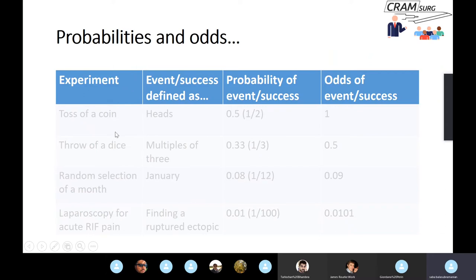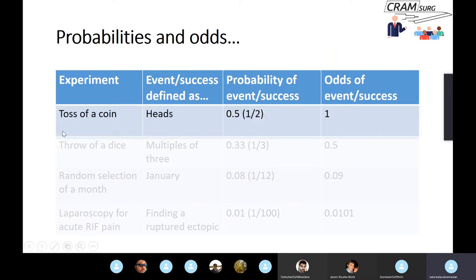Here is a table going through several experiments with events or successes, showing the probability and odds for each. For a coin toss where the event is getting heads, the probability is 0.5 and the odds is 1. For throwing a dice where the event is getting a multiple of 3 — either 3 or 6 — the probability of getting 3 or 6 out of 6 values is one third, or 0.33. The odds of getting a multiple of 3 is one third divided by two thirds, which equals 0.5.